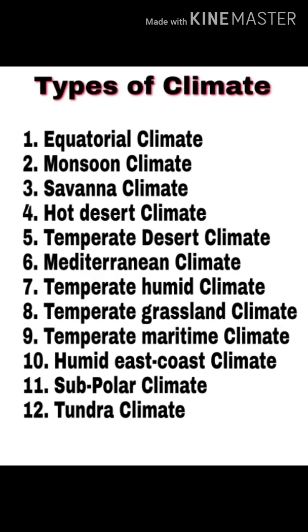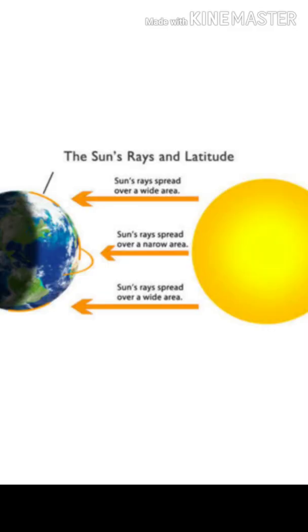Now there is this question: why are there different types of climate all around the earth? The major reason is shown in the picture. The sun rays are falling directly on the equator, that is why the temperature of the equator is more. At the poles, the sun rays are falling obliquely, that is with an angle. That is why as we go from the equator to the poles, the temperature gradually decreases. This is one of the major reasons why there are these different types of climates all around the earth.